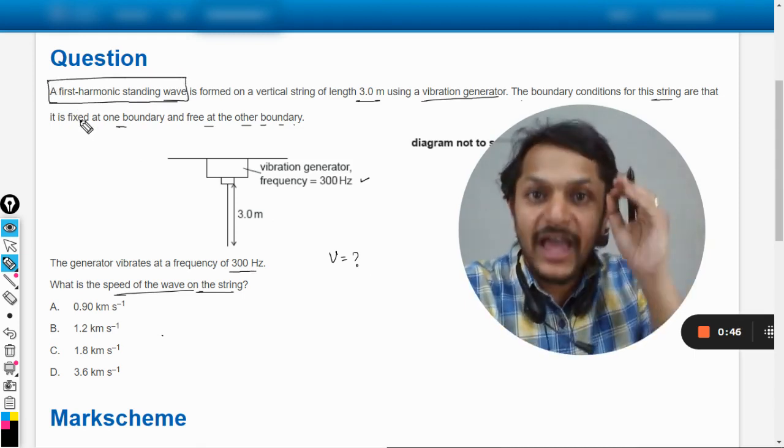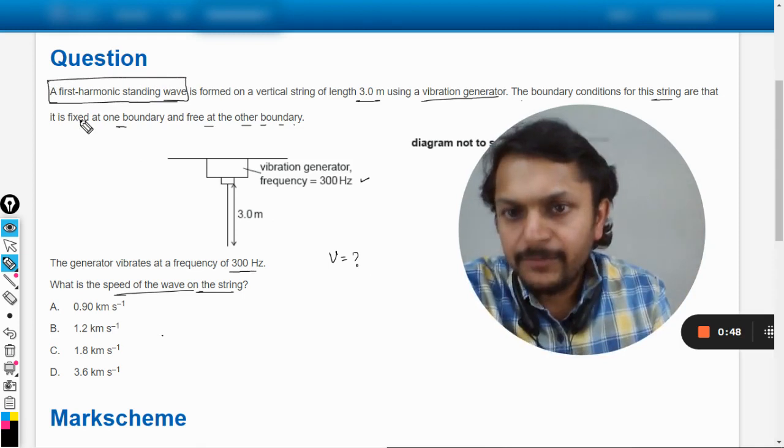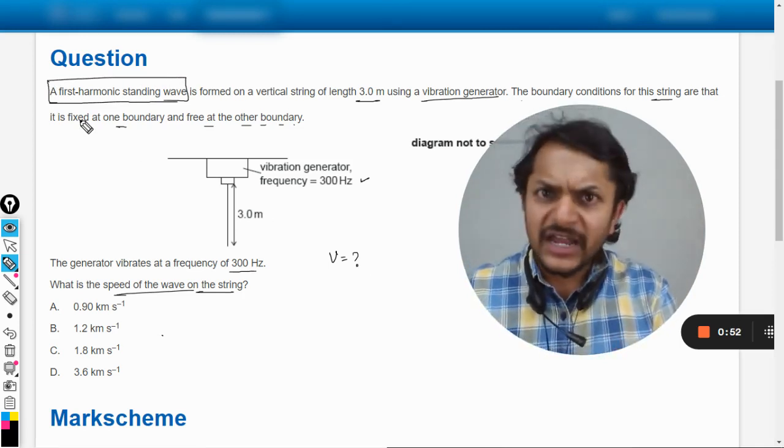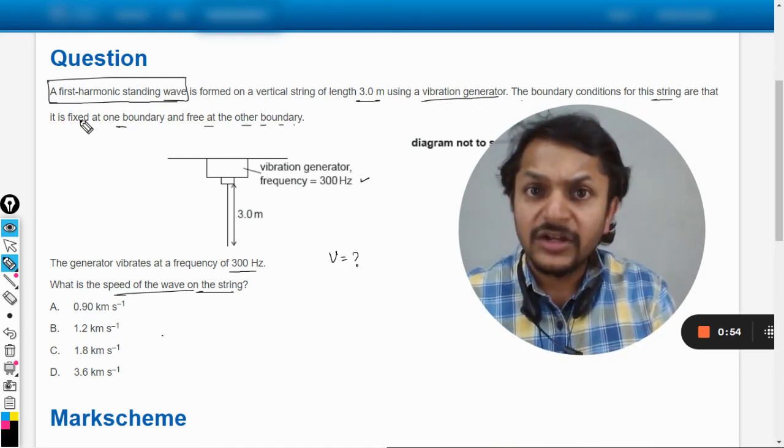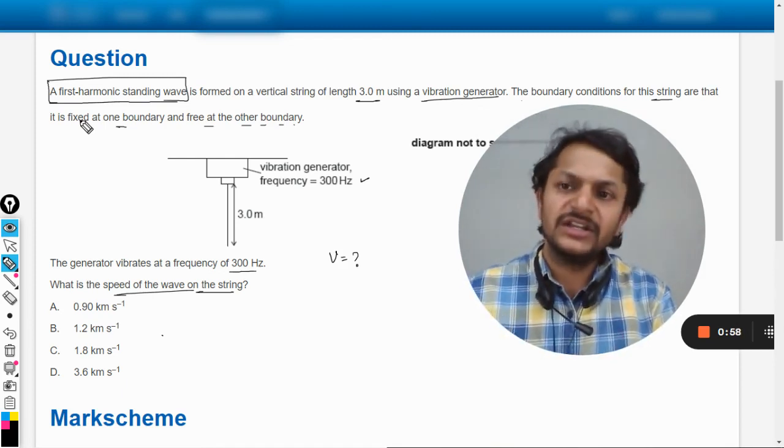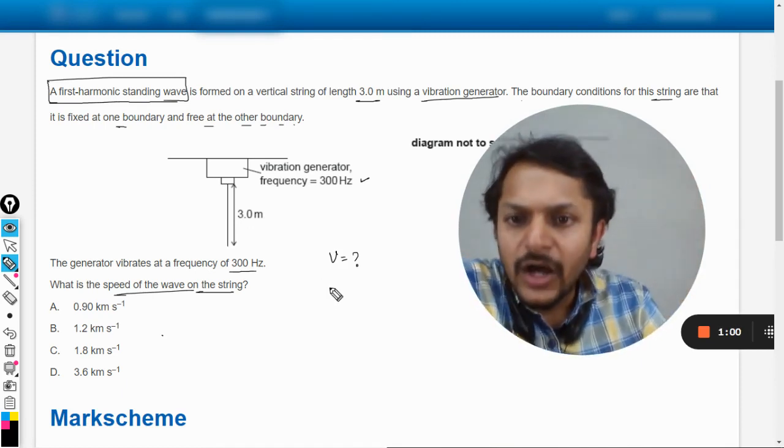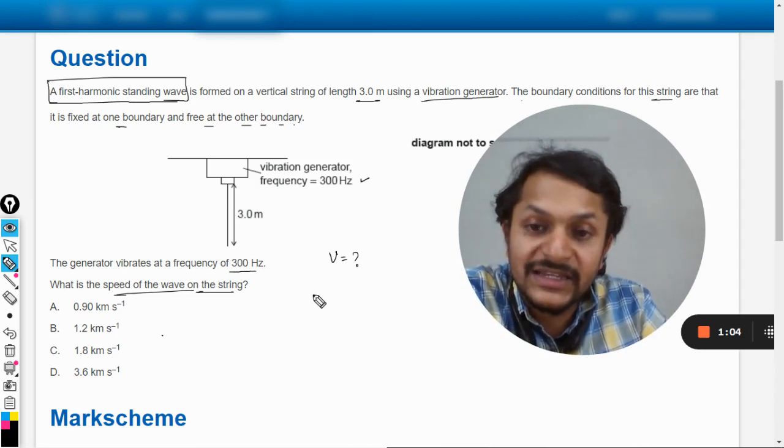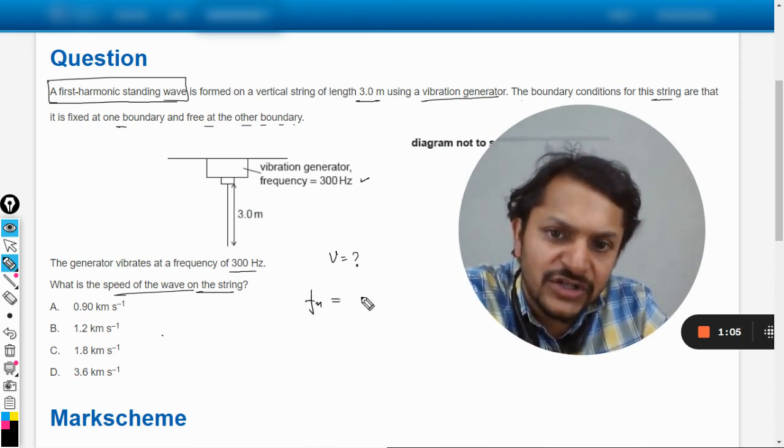The condition is that the first harmonic standing wave is getting formed there. If it is first harmonic standing wave and it is closed at one end and open at the other, we can say that the general formula for this is nv divided by 4L, and you should be memorizing this formula.